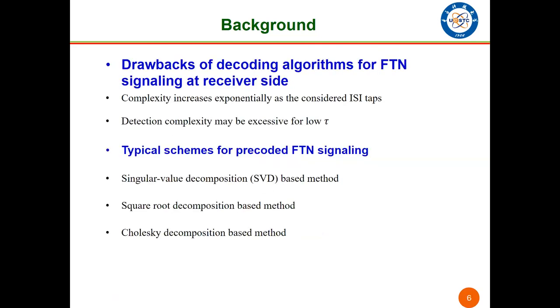So how to deal with the incurred ISI by FTN signaling? Some studies focus on processing at the receiver. However, the computational complexity of these methods increases exponentially as the ISI length increases. Other studies use pre-coding methods at the transmitter side to cancel the ISI jointly with the receiver. These methods are proved to have lower complexity than conventional methods.